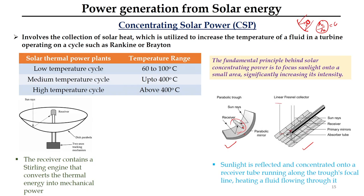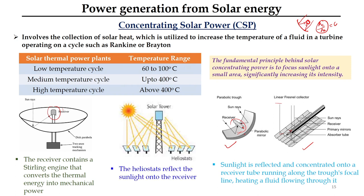A parabolic disc with a receiver has a Stirling engine — an external combustion engine — attached at the focal point. When heat is supplied, the fluid expands, driving a rotor to produce electricity. In the solar tower configuration, heliostats reflect sunlight onto a central receiver at the top of a tower, producing very high temperatures close to 800°C. Salt is used as a heat exchange medium, enabling a highly efficient power plant.